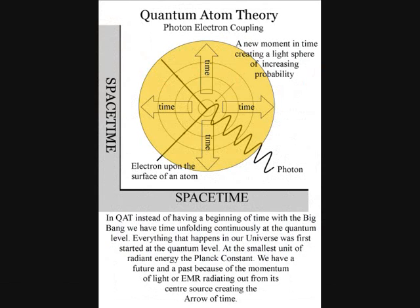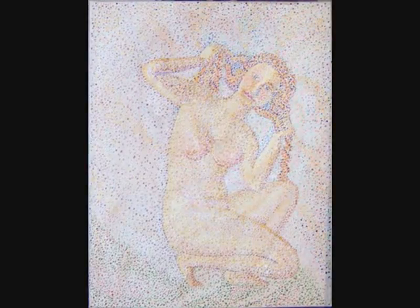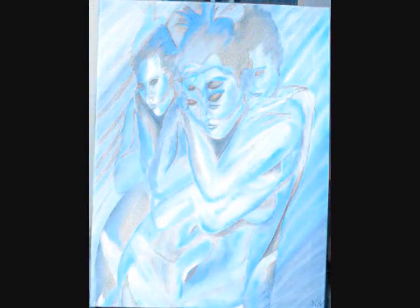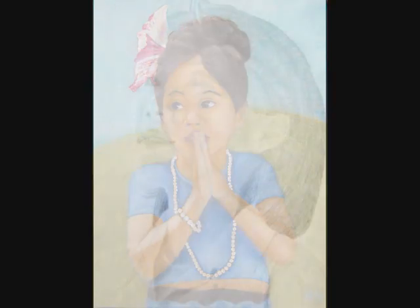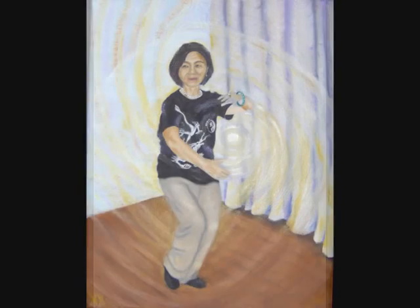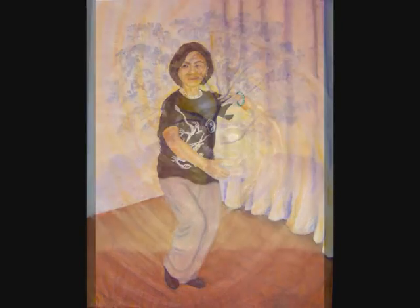In this theory, at the quantum level of the atoms, the moment of now is created by a single photon-electron coupling, creating a wave function of future possibilities. Even the individual atoms of the observer are radiating electromagnetic radiation continuously. The observer will feel this as the continuous flow of time and as the aging process.